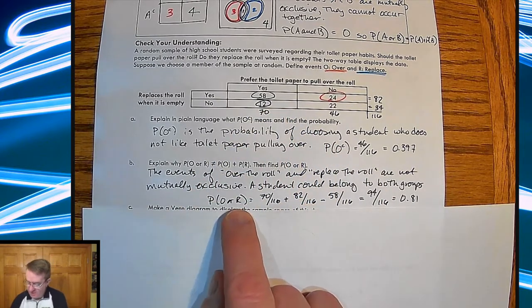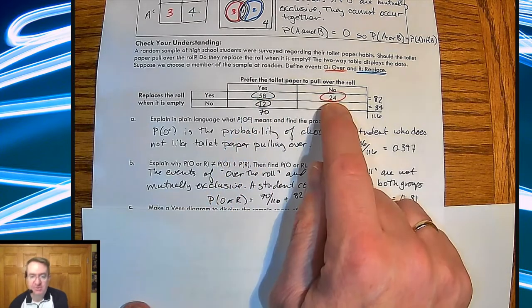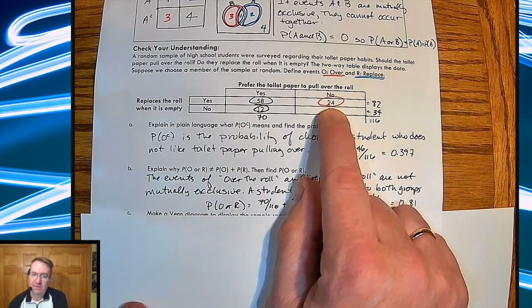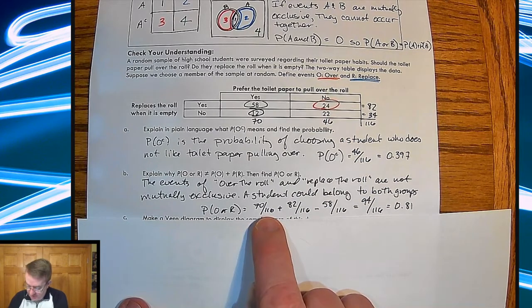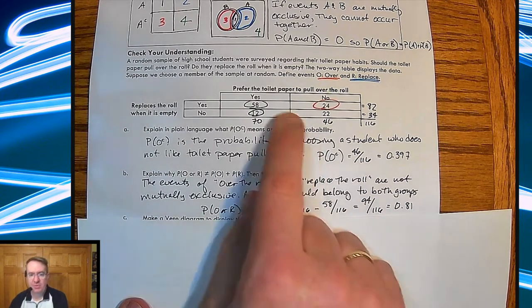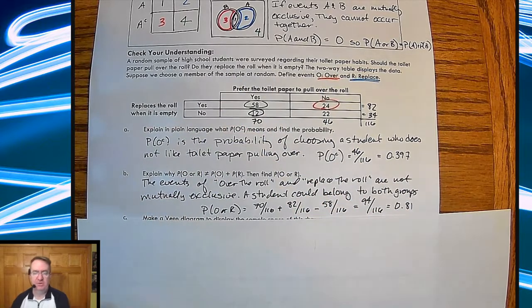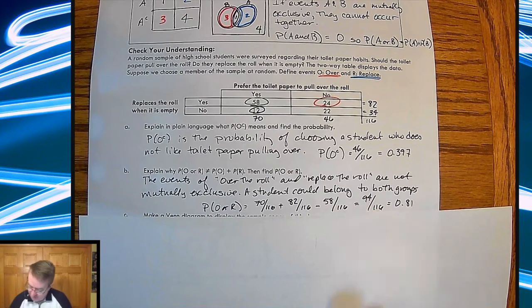And so for P of O or R, again, could you go through and go 12 plus the 58 plus 24? Yes. However, I would again recommend that you get used to doing the probability of O plus the probability of R minus their overlap, because you're going to be doing this when we don't have this. And so, again, the math isn't hard. You're working on the skill. So, anyway, so you get about 81%, 94 out of 116.